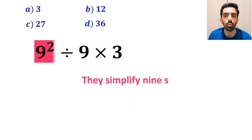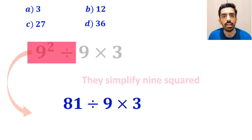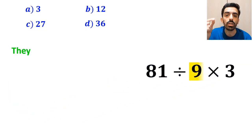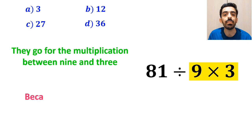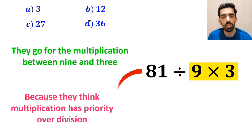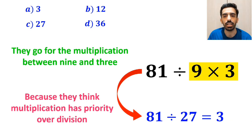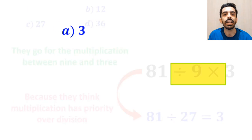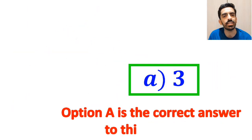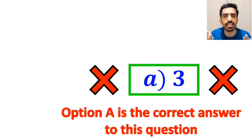They then simplify 9² and write 81 ÷ 9 × 3. In the final step, they go for the multiplication between 9 and 3 because they believe multiplication has priority over division. So they write 81 ÷ 27, which gives them the answer 3, and they conclude that option A is correct. But this is not the correct answer either — we have been tricked again.